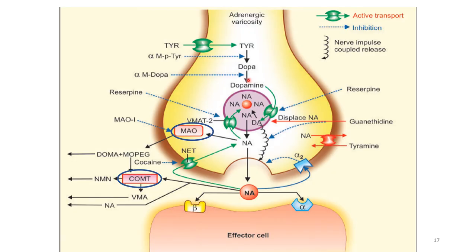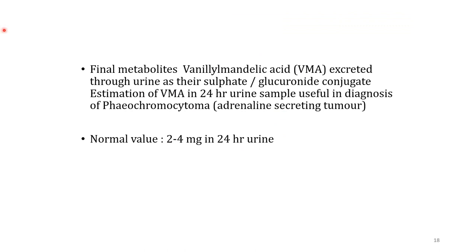Regarding metabolism of norepinephrine: it is stored in vesicles, or if in the cytoplasm, destroyed by monoamine oxidase. If it leaks into the cytoplasm, catechol-O-methyltransferase destroys it. The ultimate final metabolite is vanillylmandelic acid (VMA), excreted in urine as sulfate and glucuronide conjugates. Estimation of VMA in a 24-hour urine sample is useful in the diagnosis of pheochromocytoma. The normal value of VMA is 2–4 mg in 24 hours.